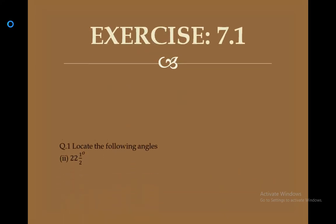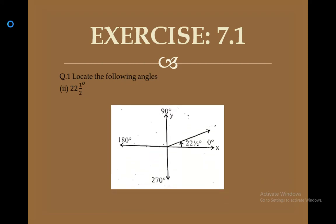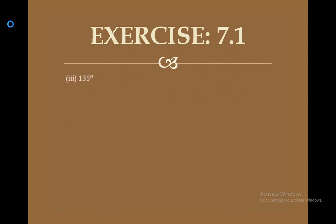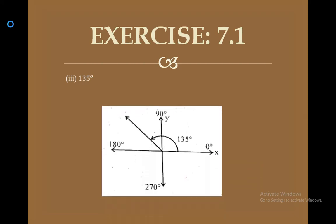Question 1 says: locate the following angles. Part 2 is 22 and 1/2 degrees. Since it contains only a positive sign, it will be anti-clockwise, and the terminal arm falls in the first quadrant. Part 3 is 135 degrees — again positive, so anti-clockwise. One quadrant gives 90 degrees, plus 45 gives 135, and the terminal arm falls in the second quadrant.